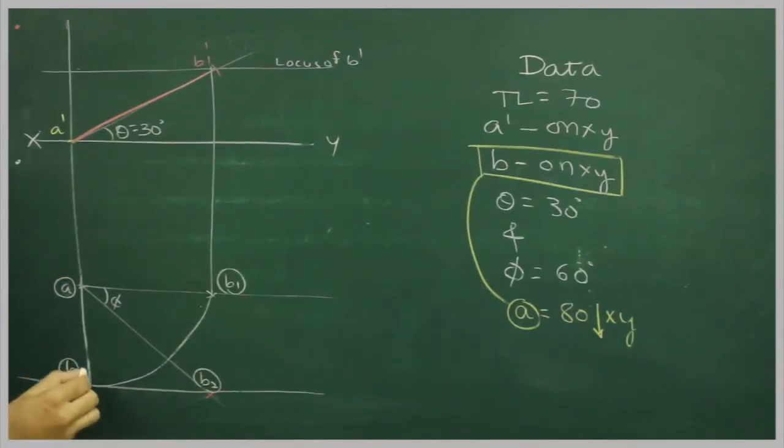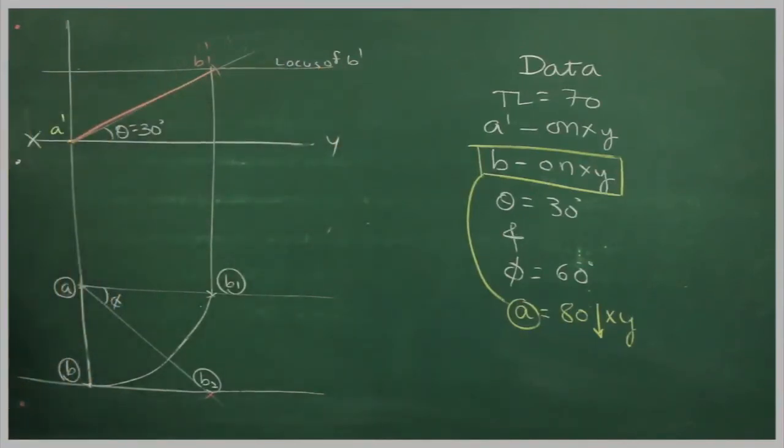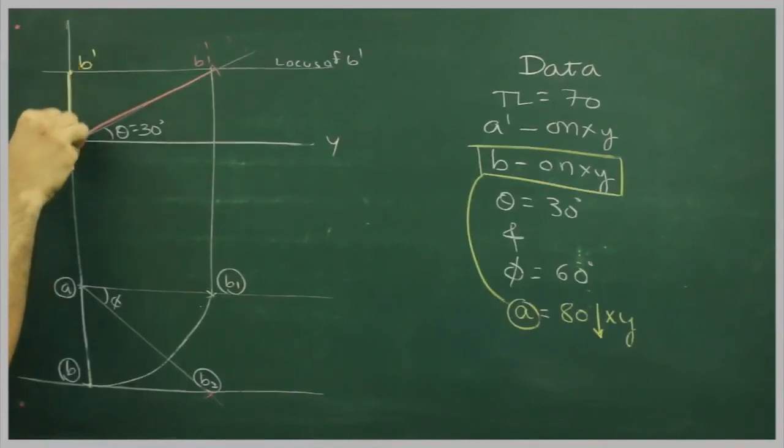Now we can take this point b straight up. So wherever it will intersect with the locus of b dash, that point would be b dash. So this is the front view.